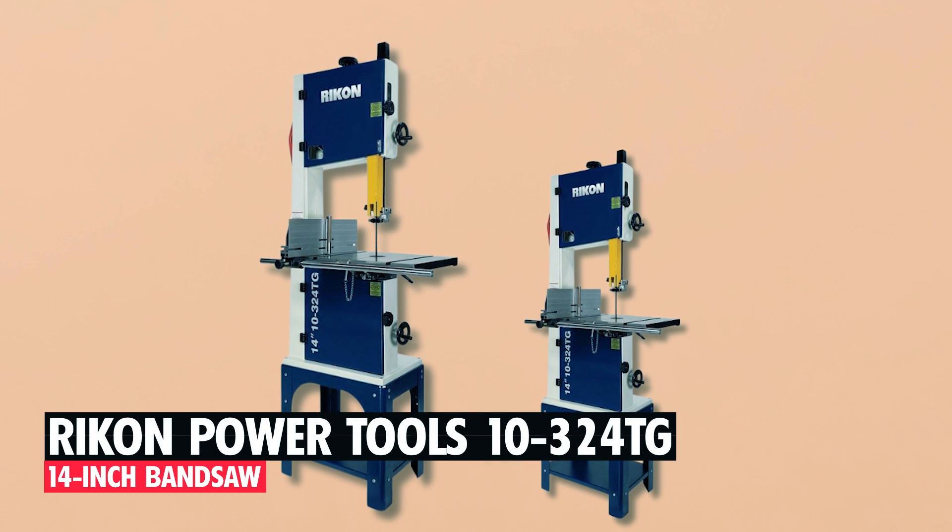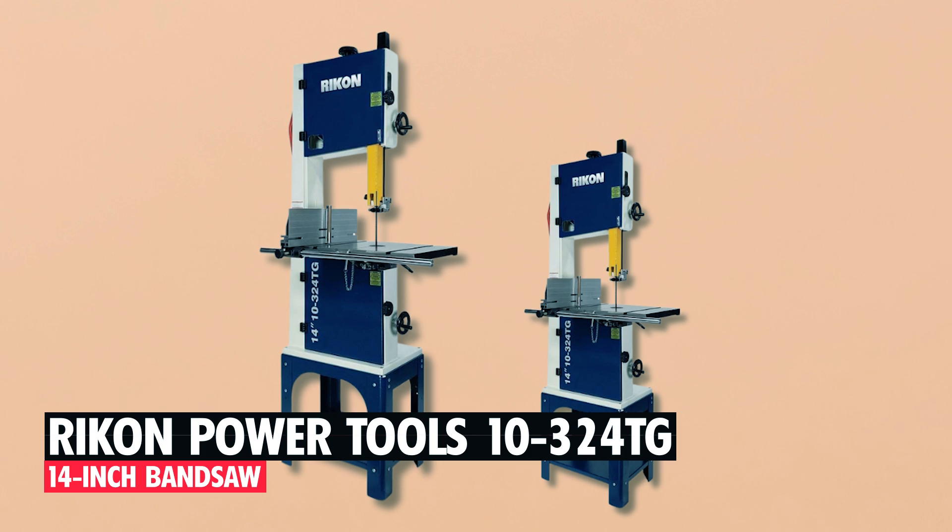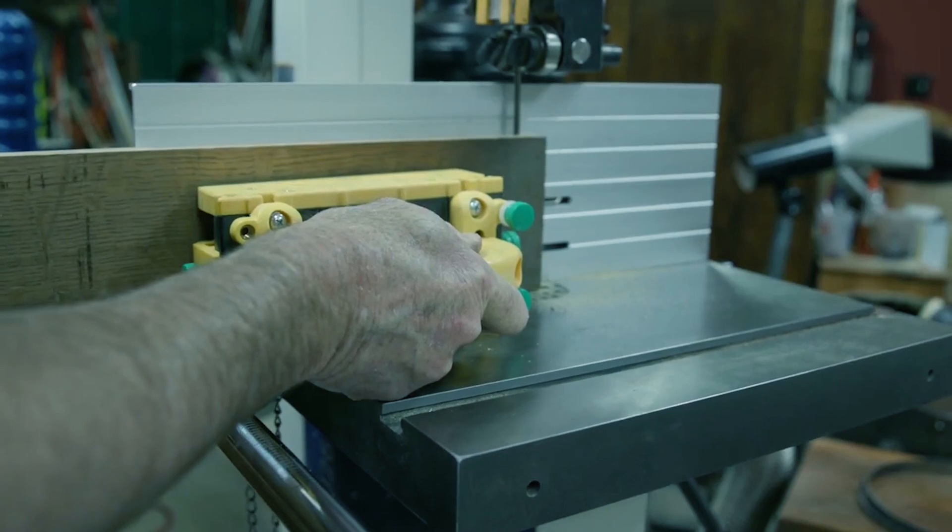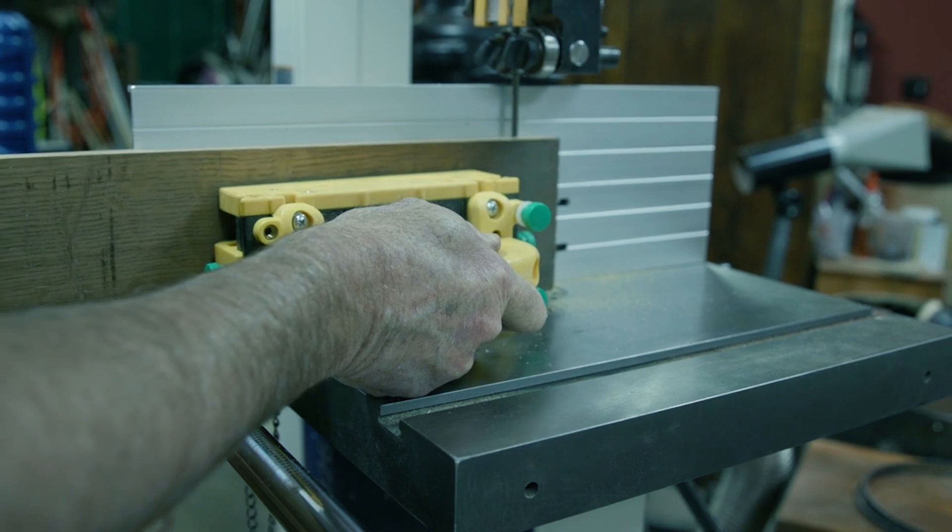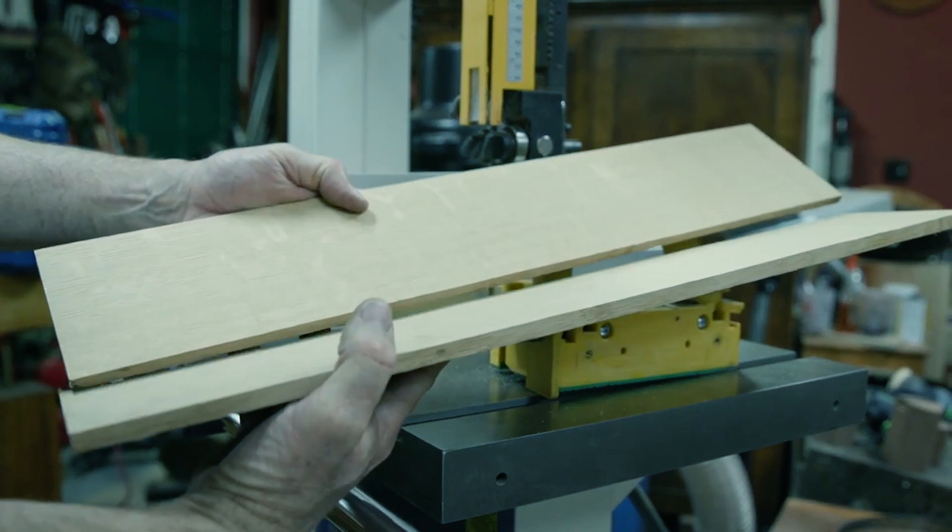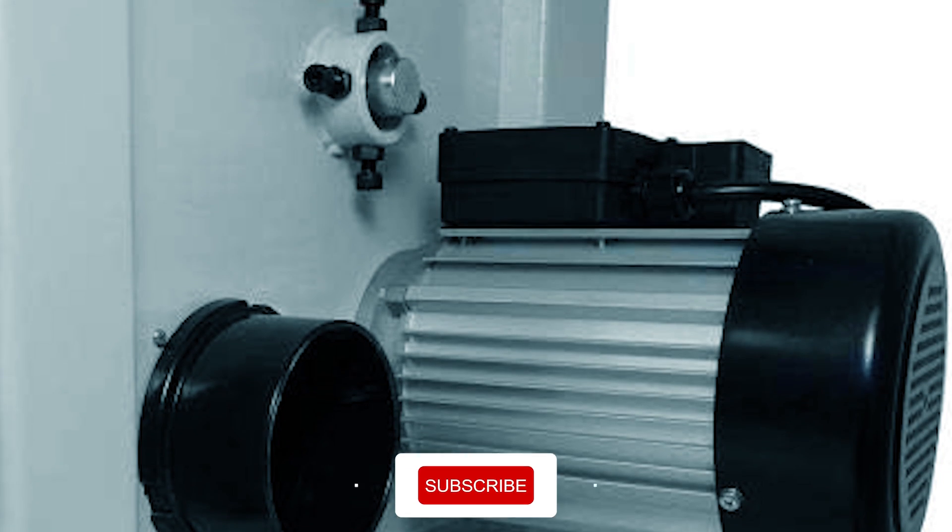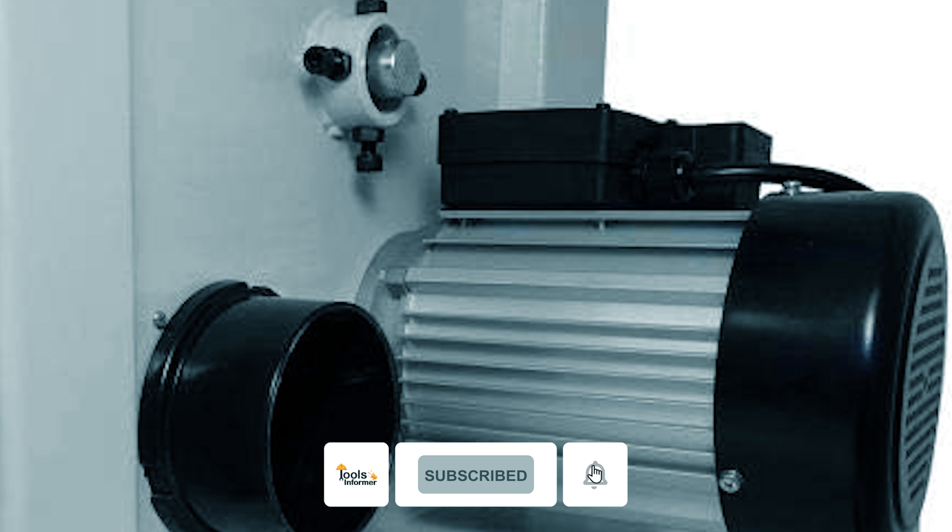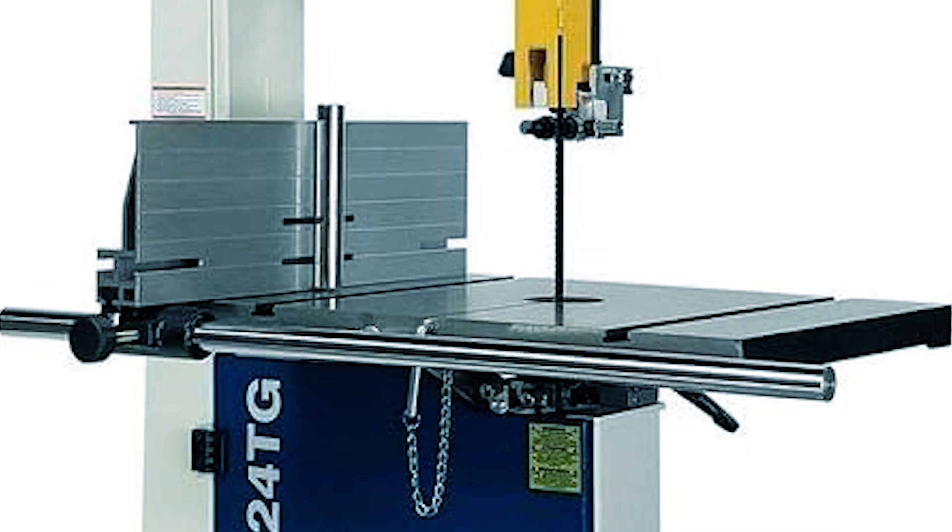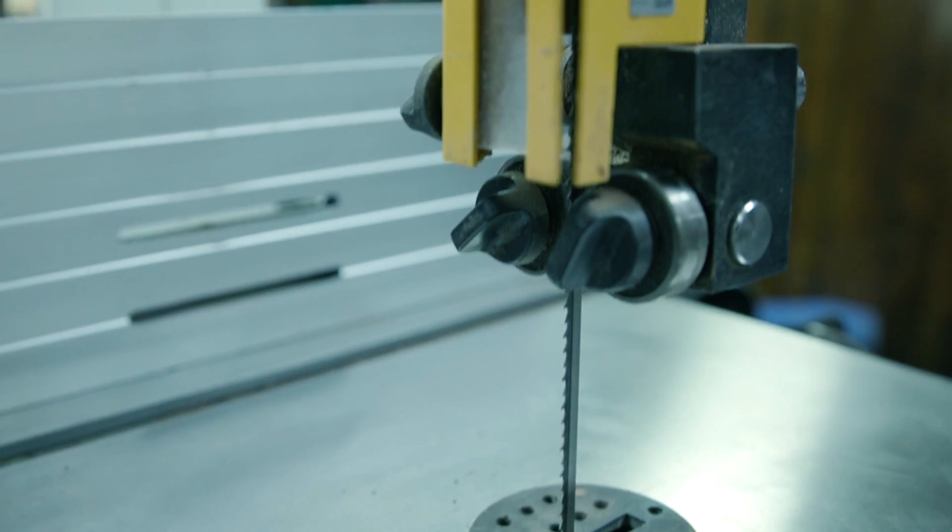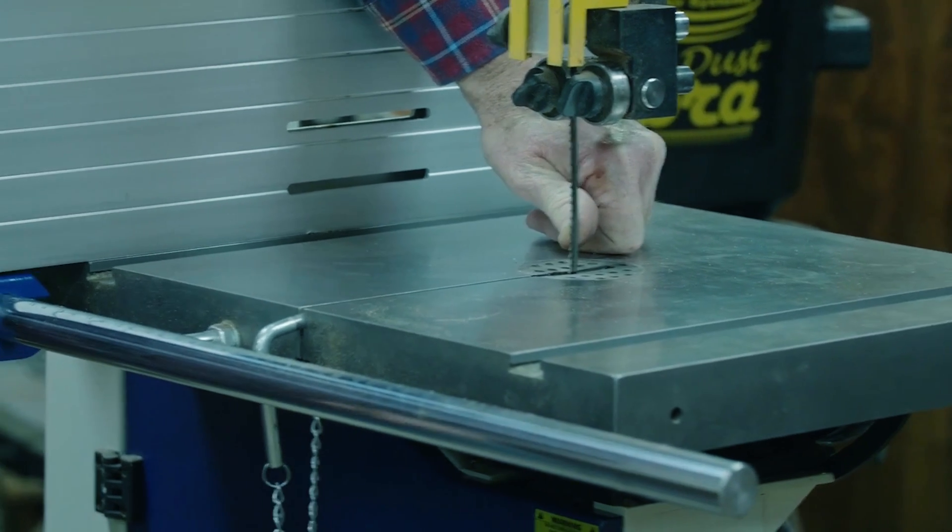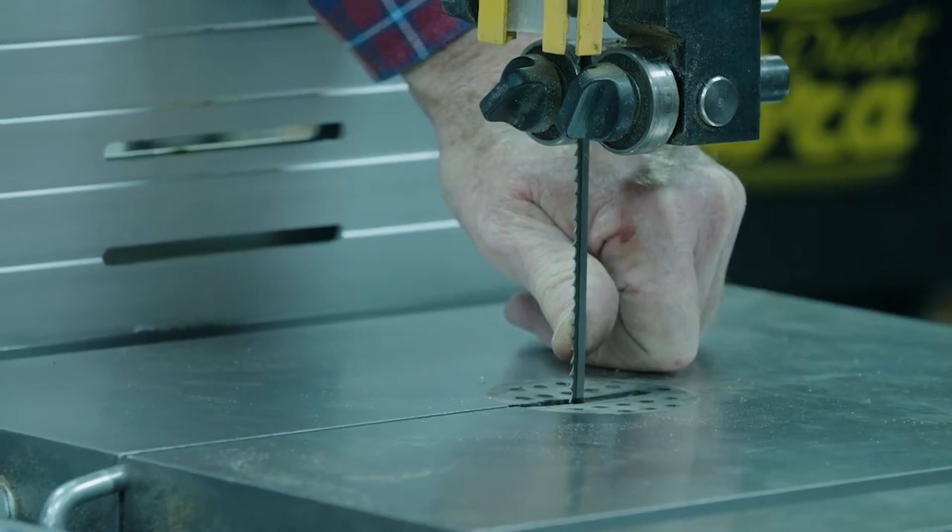Ryobi Power Tools 10-324 TG 14-inch Bandsaw. The Ryobi Power Tools 10-324 TG 14-inch Bandsaw offers an impressive cutting capacity at an entry-level price, making it a standout choice. Powered by a 1-1/2 HP motor with dual-volt capability, it handles various materials, including non-ferrous metal and plastics. The tool-less thumb-screw bearing locks streamline setup, and the longer steel fence rail provides ample space for larger workpieces.